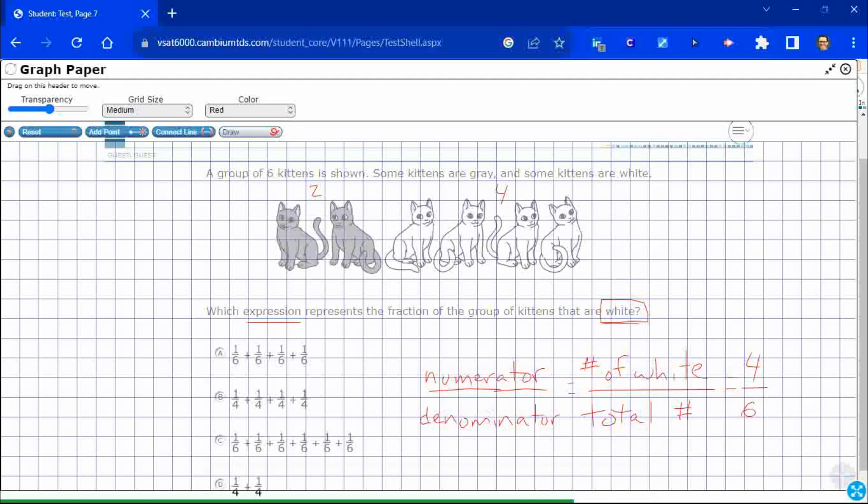But we're not simply looking at what is the fraction of kittens that are white. That's something you might do in second grade. Now we need to decompose it into the smaller sections. Okay.